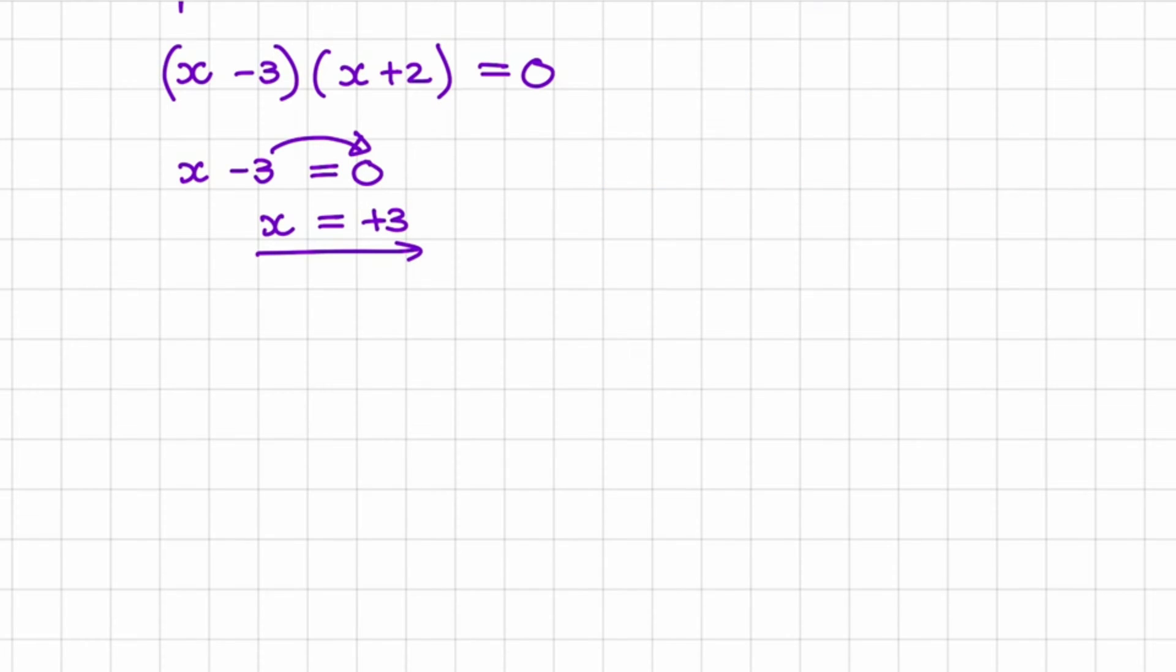And the way we do that is we say we want to take the second bracket and make that equal to 0. And if I solve for x now, I'll have x is equal to negative 2.